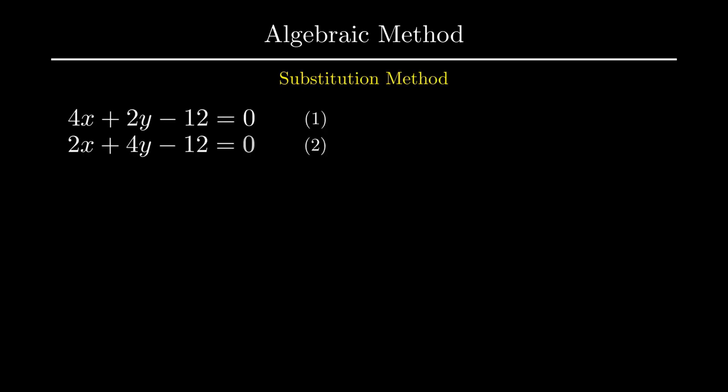There are algebraic methods to simplify such pair of equations. Let us understand the first algebraic method which is called the substitution method. Continuing with the same examples, if we substitute variable x by the rules of transposing from equation number 1 as 12 minus 2y upon 4.